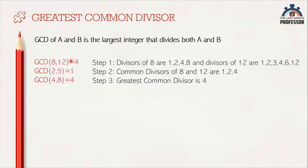For example, consider 8 and 12. The common divisors for 8 and 12 cannot exceed 8, because any number greater than 8 cannot be a divisor of 8. So, the GCD for any two numbers cannot exceed the minimum of the two numbers. In short, GCD of two numbers varies from 1 to the minimum of the two numbers.